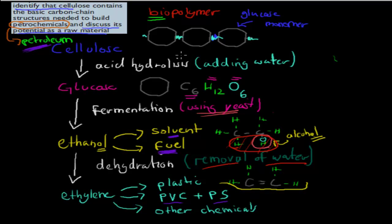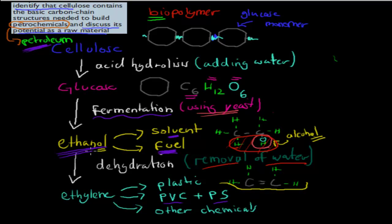The reason why is because we can go from cellulose into its monomers — glucose — which contains the carbons, hydrogens, and oxygens needed to make ethanol. We ferment using yeast to produce ethanol, which is a very good fuel and solvent. Then we can dehydrate ethanol to get ethylene, and from ethylene we can make all those petrochemicals such as polyethylene, polyvinyl chloride, and polystyrene.